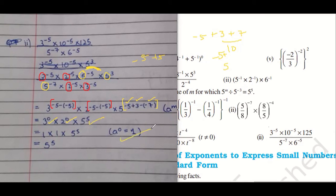So anything to the power of 0 is 1. So answer is 5 power 5. Absolutely correct. Very good.